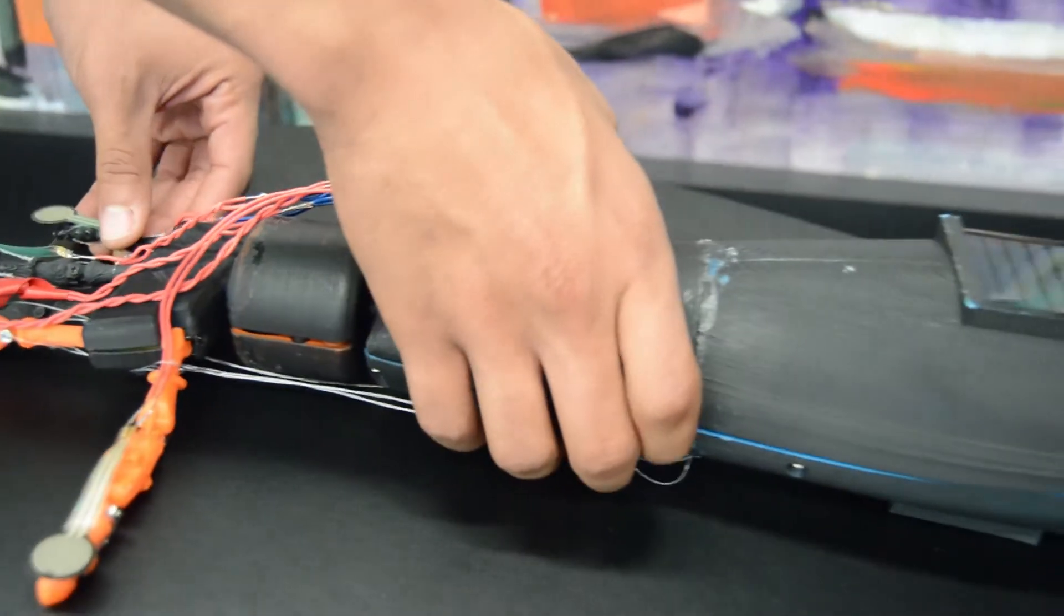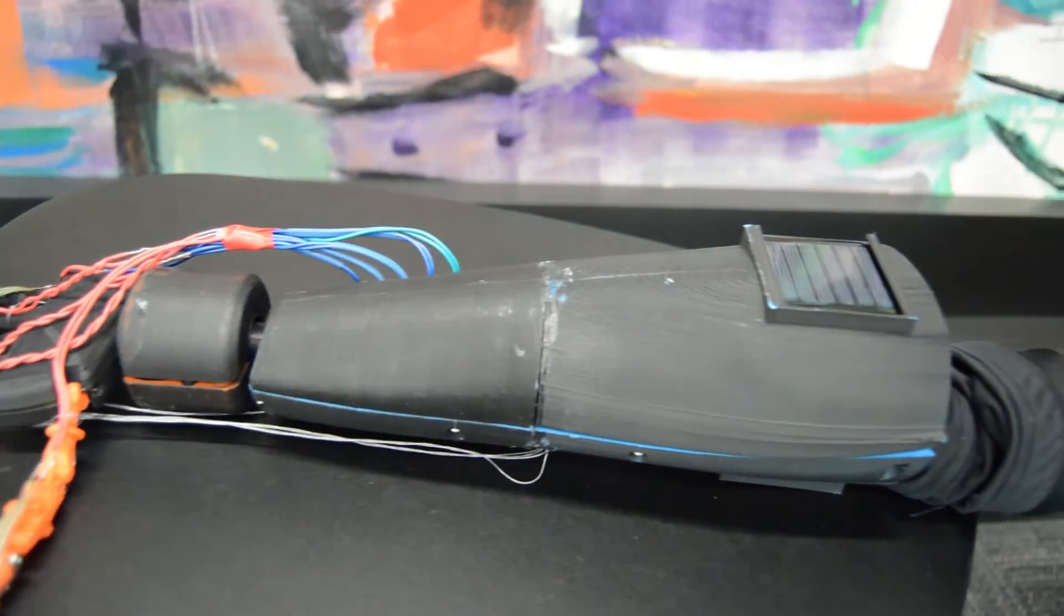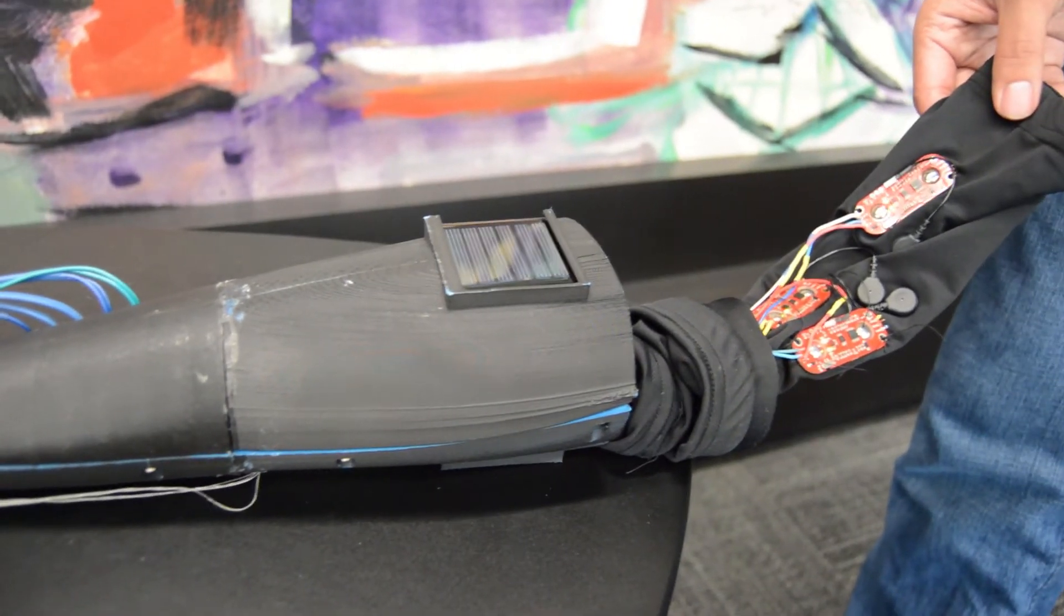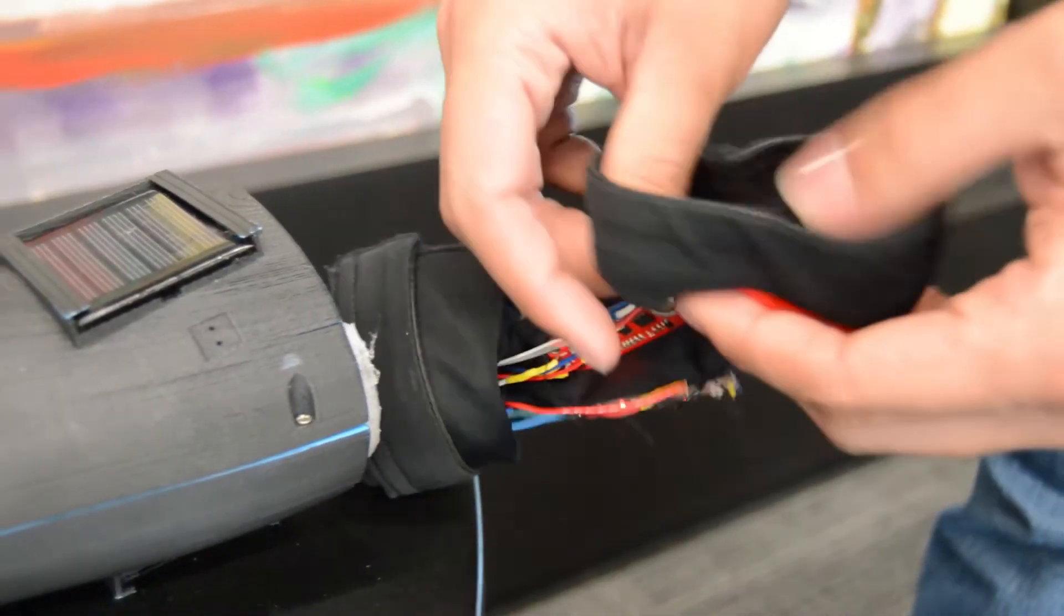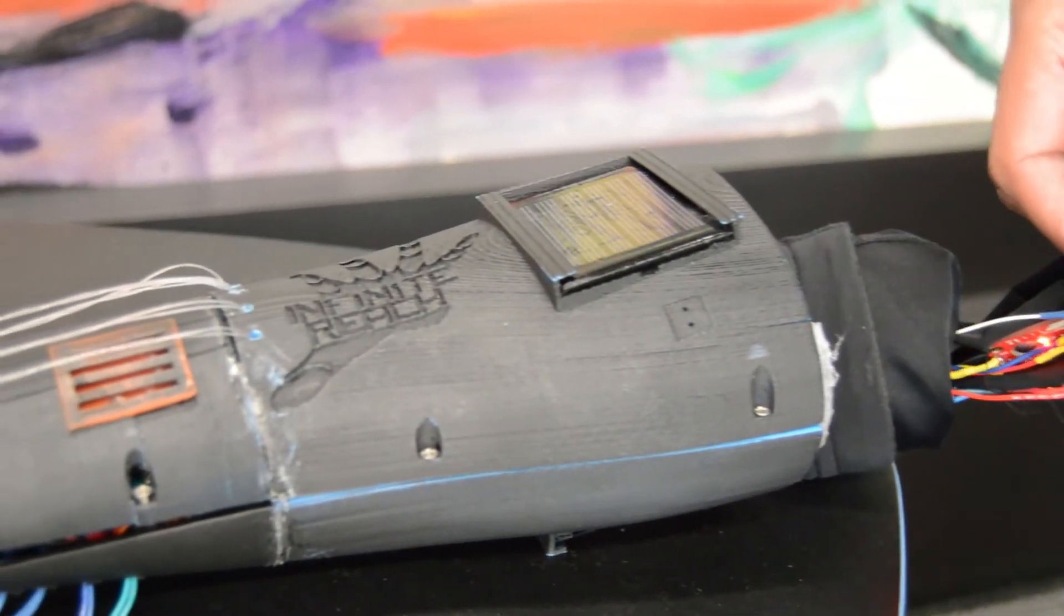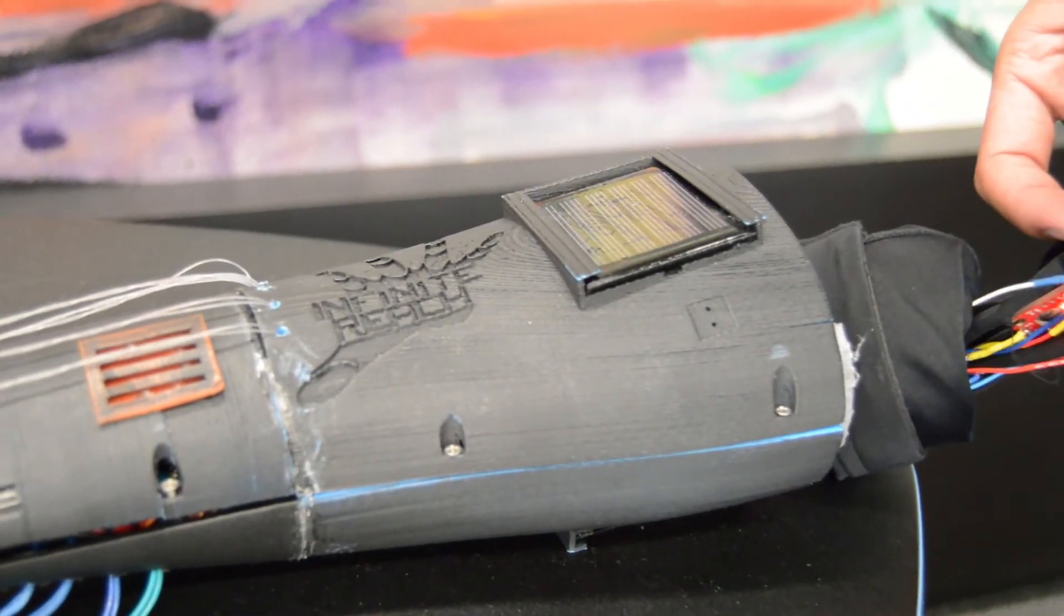Right now the arm is pretty much in full assembly. As you can see, we have everything wired up without the synthetic skin that we're also using for a sense of real aesthetic and a more lifelike appearance and feel for the user as well as anyone else who's interacting with the arm.